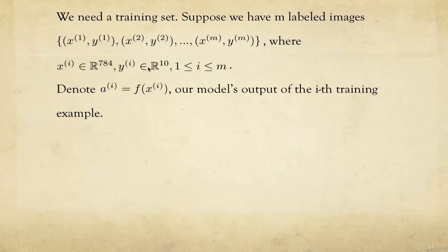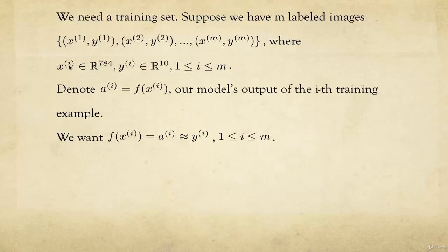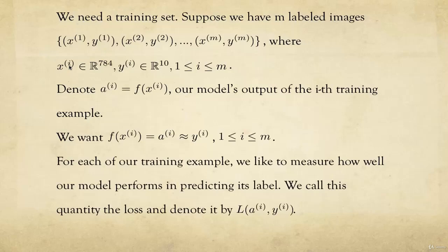We call a^i the output of the i-th training example. So x^i is the image, and when we apply our model to it, a^i is the prediction vector. We want a^i to be approximately the same as y^i — the prediction to be approximately the same as the label. For each training example, we want to measure how well our model performs, and we call this the loss L(a^i, y^i) — the error between our prediction and the ground truth.